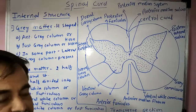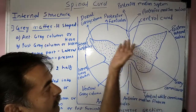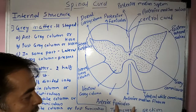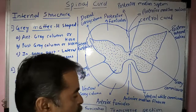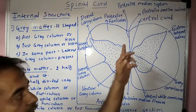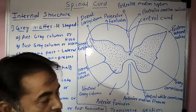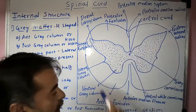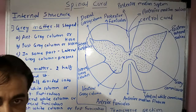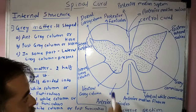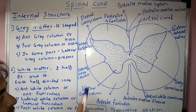Now we will see the internal structure of the spinal cord, which is observed after taking a transverse section. In the transverse section, the anterior and posterior parts are visible. The inner S-shaped part is called the grey matter, while the outer part is called the white matter.